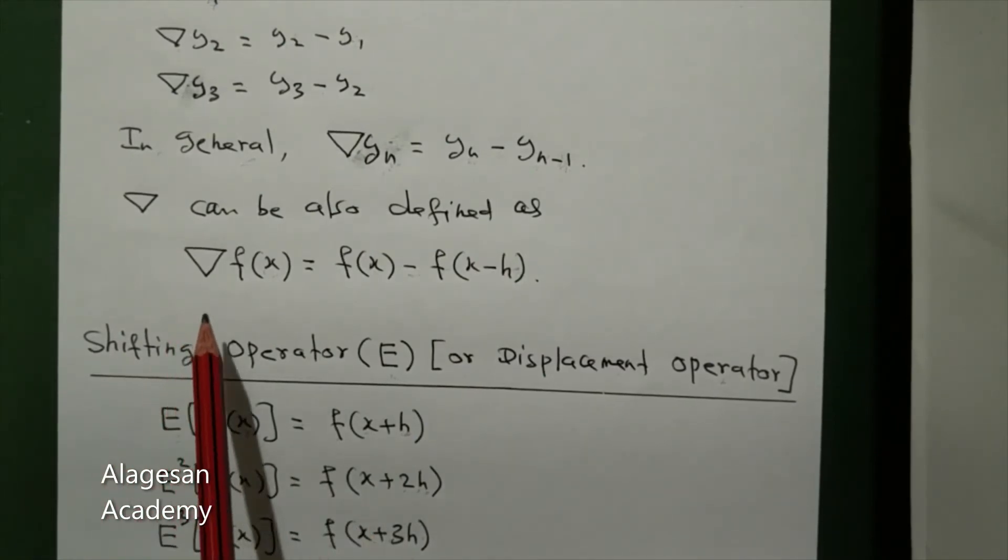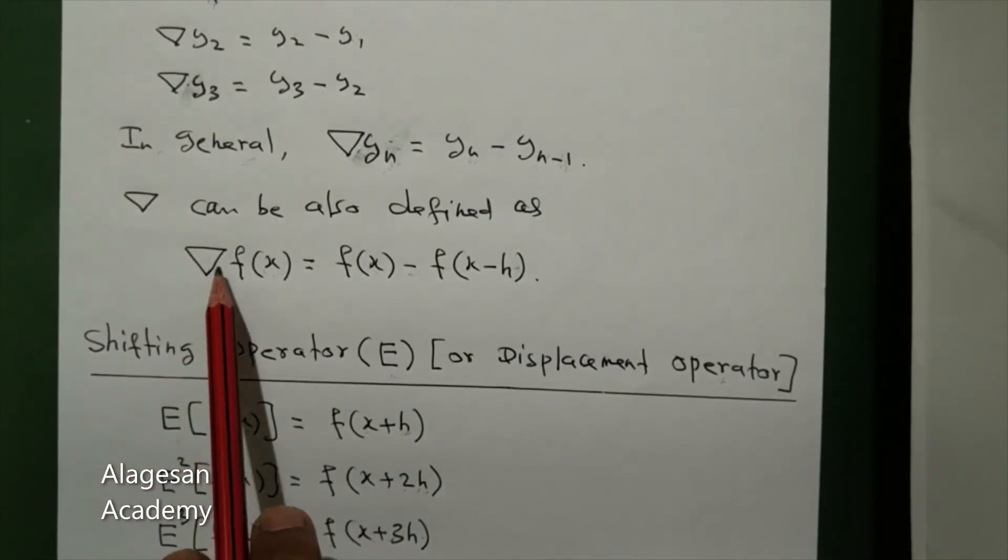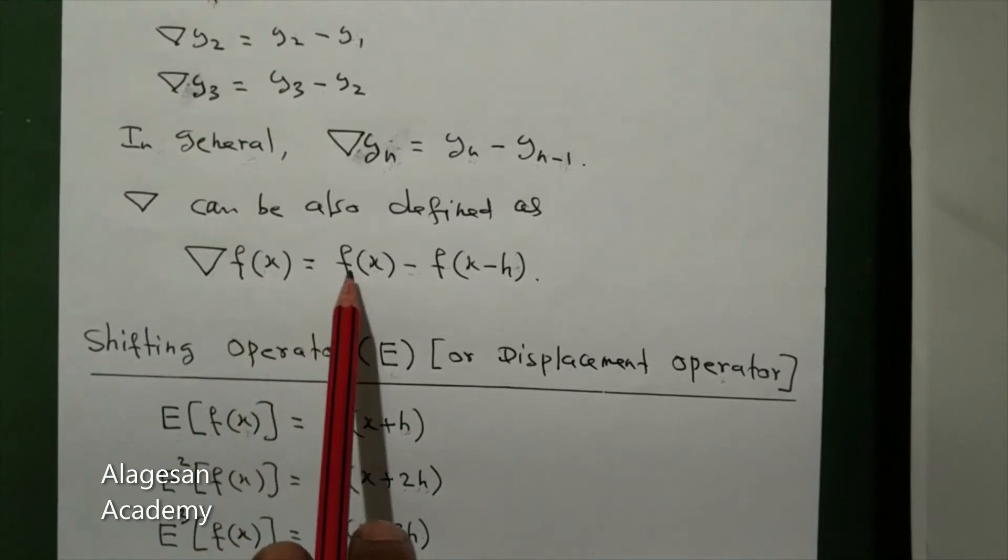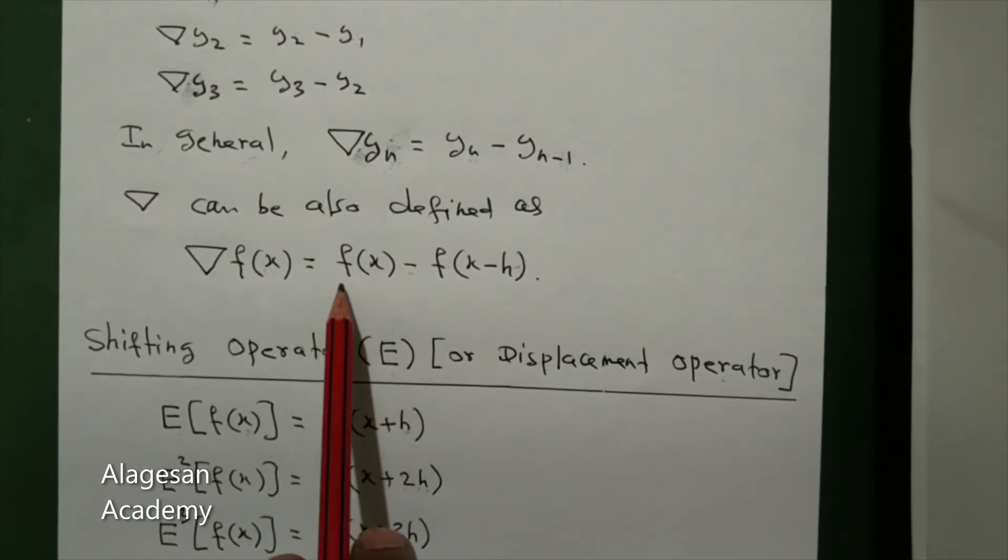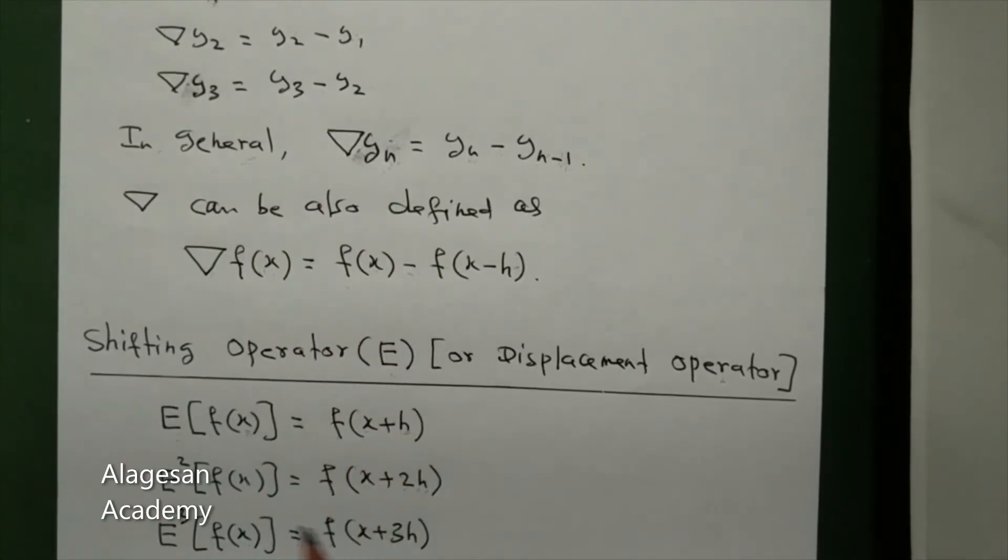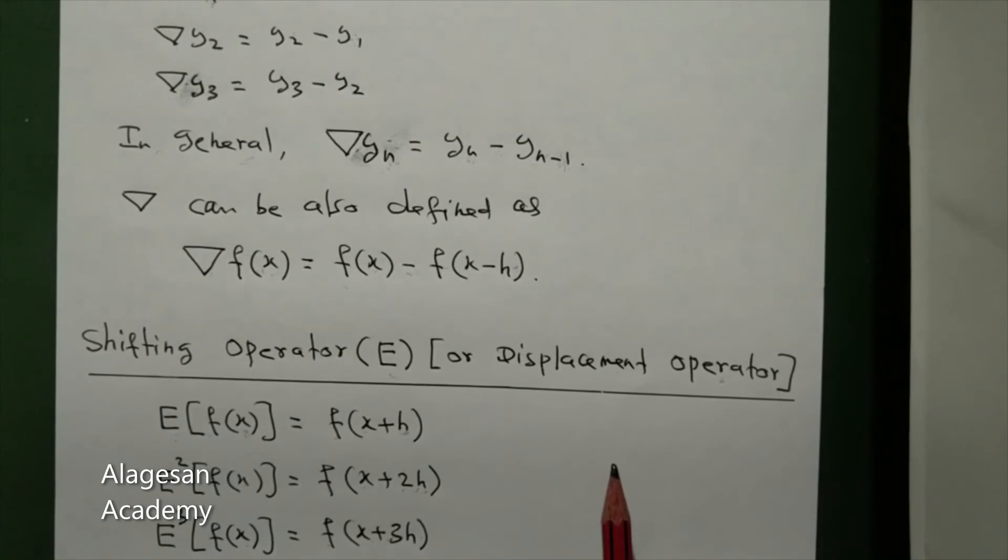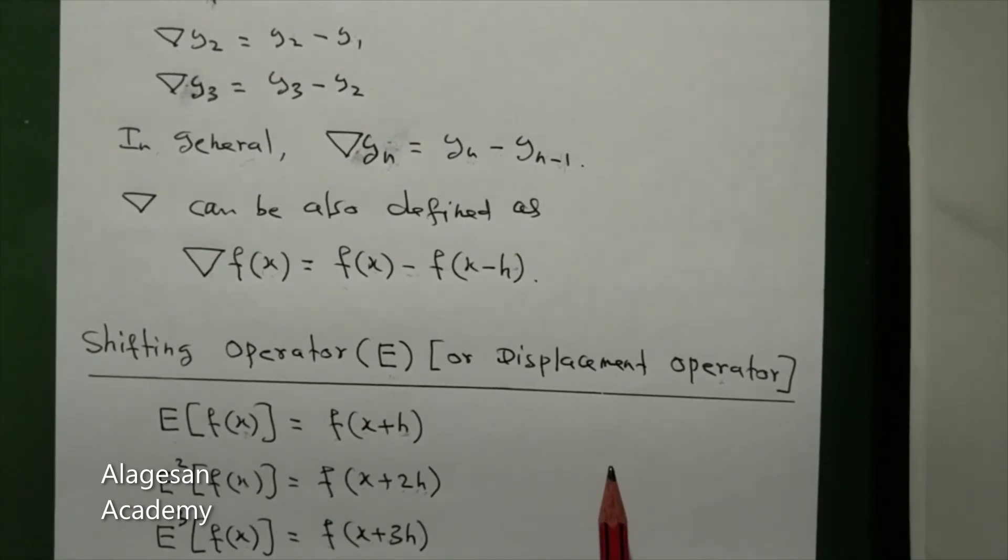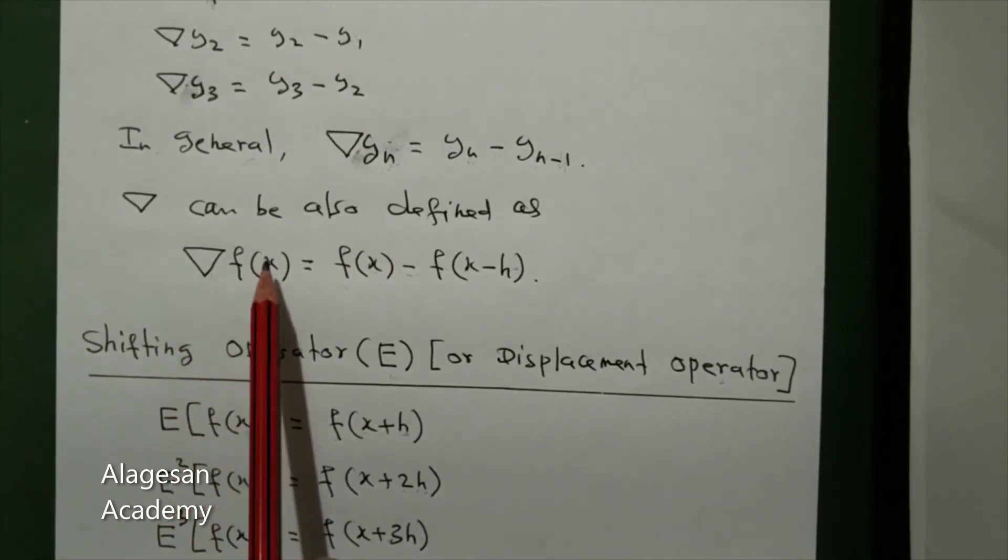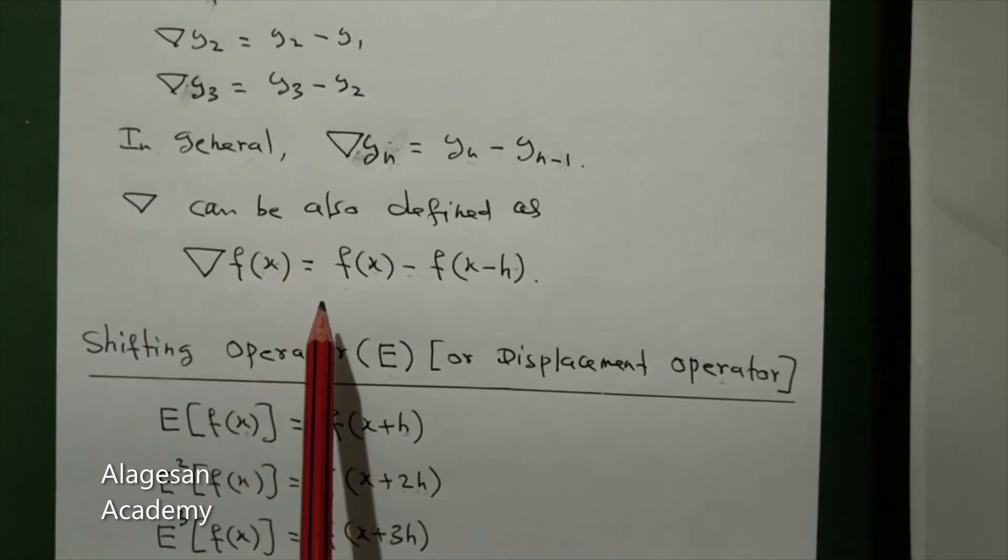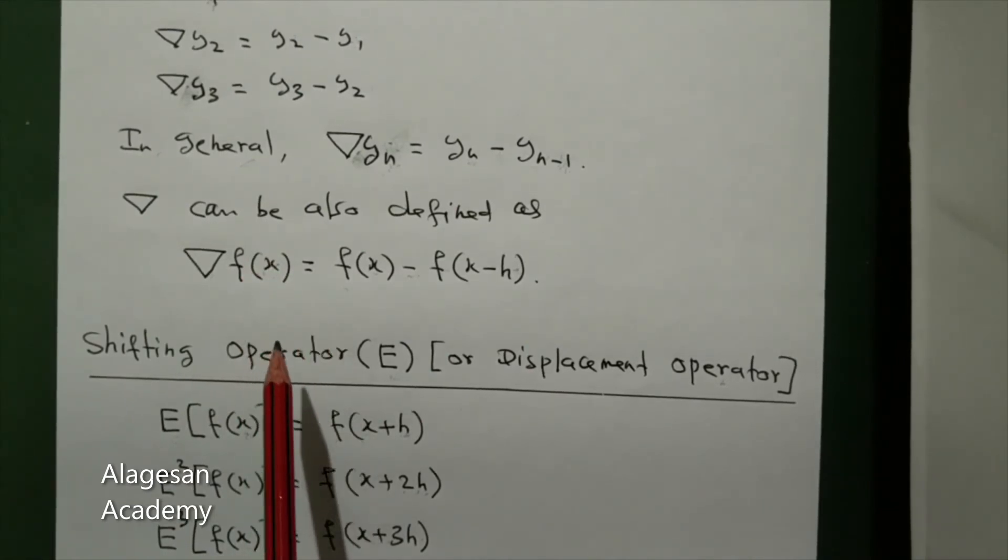It is like the forward difference operator. Delta is f of x plus h minus f of x, so f of x is equal to f of x minus f of x minus h for the backward difference.